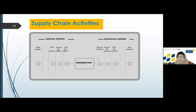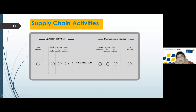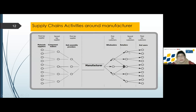The first tier customer is supposed to be the big distributor. This is maybe an agent, sub-distributor, and this is a retailer. At the end, we come to the final. Before the organization, before the manufacturer, we call upstream activity. And after, we call downstream activity. This is a supply chain activity around the manufacturer, more complex.